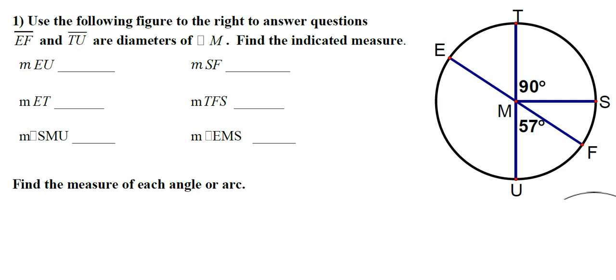Hi guys, this is Ms. Ehrig and we're going to go over question number one on your circle review. Okay, so it tells us that EF and TU are diameters. Let's first consider EF and how that might be able to help us. Here's EF.